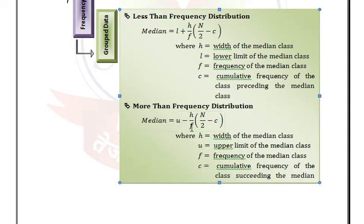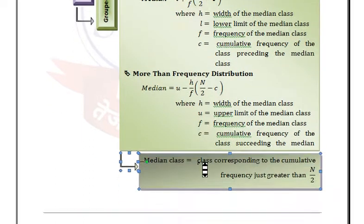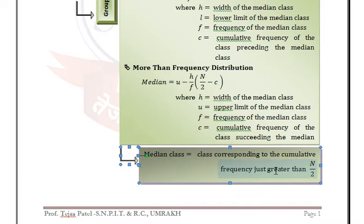F is the frequency of the median class, and C is the cumulative frequency of the class succeeding the median class. The median class is the class corresponding to the cumulative frequency just greater than N/2.